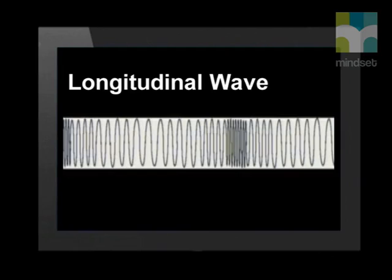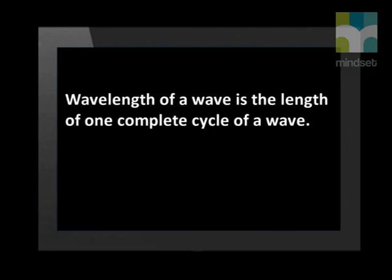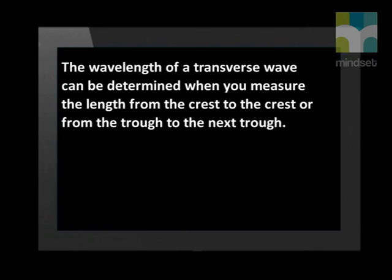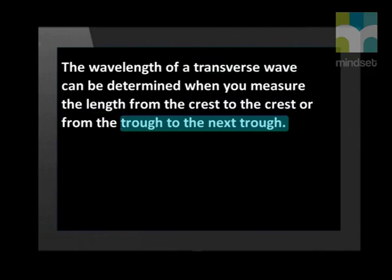The diagram for a longitudinal wave is shown as different parts that move close together and far apart. As discussed before, the wavelength of a wave is the length of one complete cycle of a wave. The wavelength of a transverse wave can be determined when you measure the length from crest to crest or from trough to the next trough.